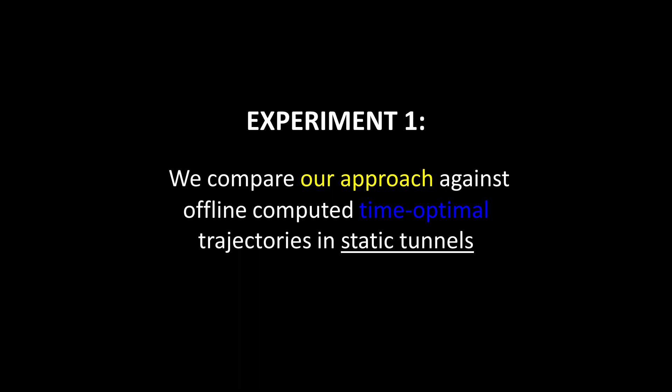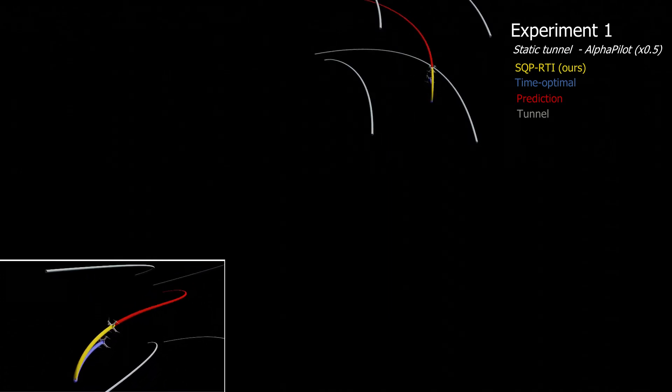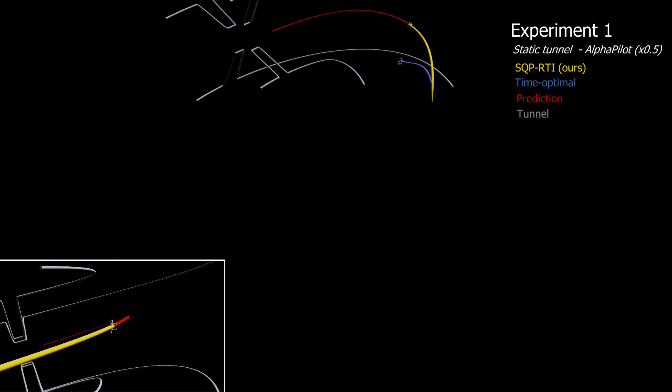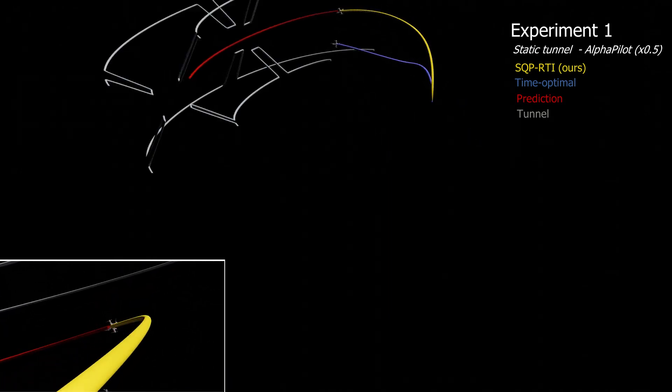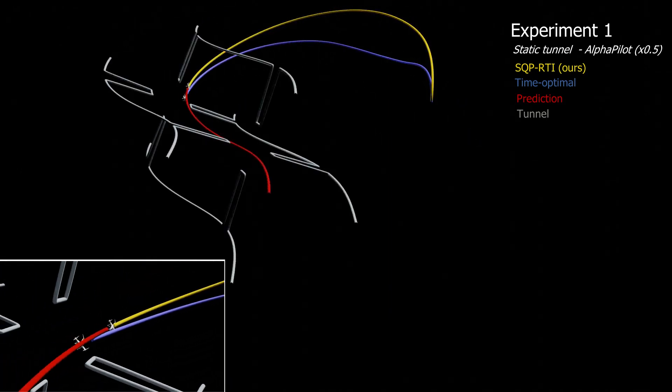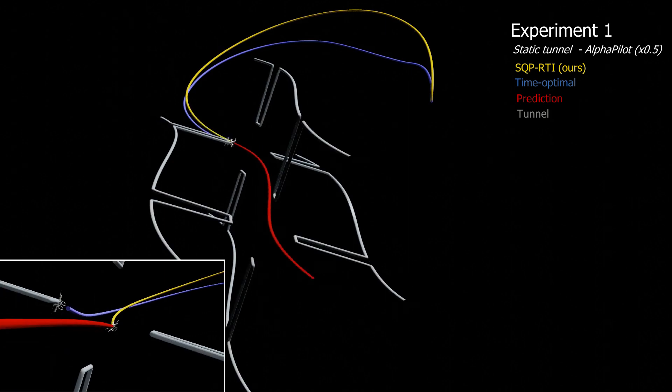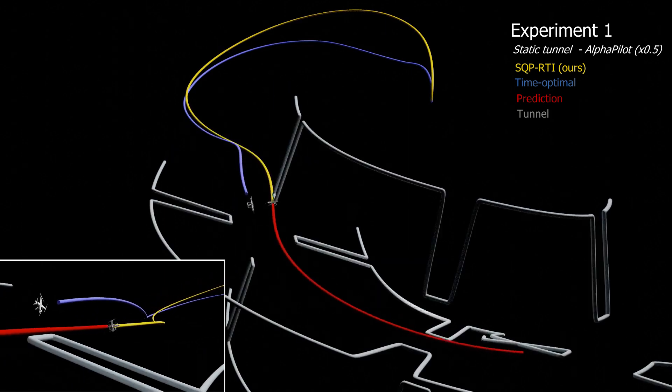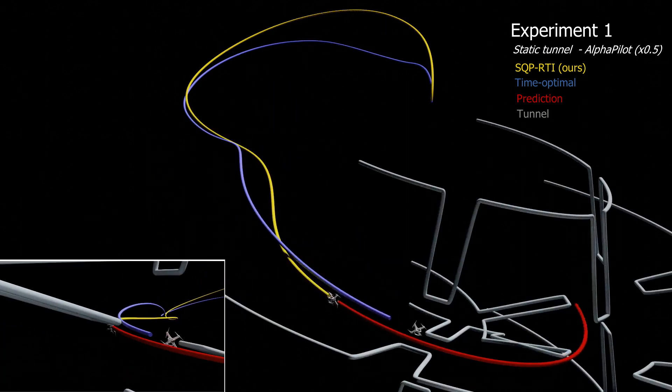To evaluate our approach, we start by comparing it to offline-computed time-optimal trajectories when navigating along three different fixed tunnels of varying shapes and sizes. We first compare the performance of our method, depicted in yellow, to the time-optimal solution, shown in blue, when navigating along the nominal racetrack from the Alpha Pilot Challenge.